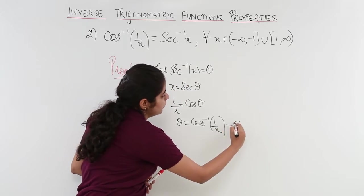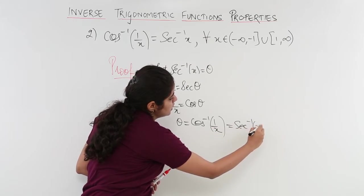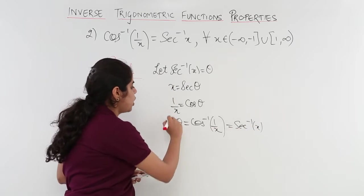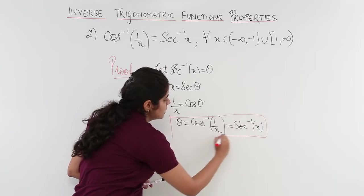So it is equal to secant inverse of x and this we enclosed in a box because this is the final result that we were supposed to prove.